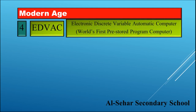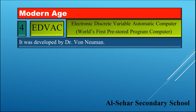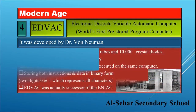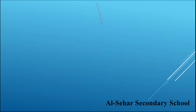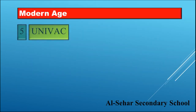EDVAC — Electronic Discrete Variable Automatic Computer — was the world's first pre-stored program computer. It was developed by Dr. Von Neumann. It contained approximately 4,000 vacuum tubes and 10,000 crystal diodes. It influenced modern digital computers, as different programs can be loaded and executed on the same computer, storing both instructions and data in binary form — two digits, zero and one — which represent all characters. EDVAC was actually the successor of ENIAC.